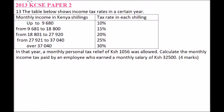This question is from the 2013 KCAC Paper 2. The table shows income tax rates in a certain year, with monthly income in Kenyan shillings and the corresponding tax rate. Up to 9,680 you are taxed at 10%, from 9,681 to 18,800 at 15%, and so on up to over 37,000 taxed at 30%. The monthly personal relief of 1,056 Kenyan shillings was allowed. We need to calculate the monthly income tax paid by an employee earning a monthly salary of 32,500 Kenyan shillings.